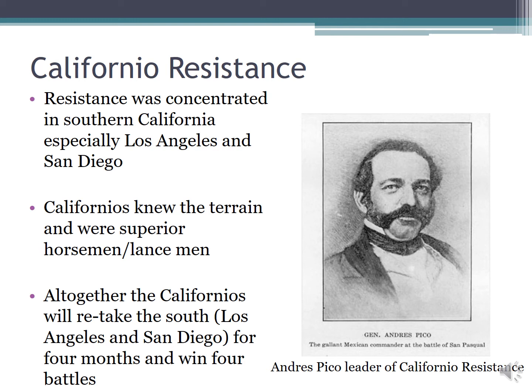The pockets of resistance were mostly in Southern California — Los Angeles and San Diego. These Californians were well equipped on their horses. They were superior swordsmen and knew the terrain, giving them a real advantage. They retook parts of the Southland for four months and won four battles. The idea that Americans came into California without meeting any resistance is absolutely false. There were Californians who did not want California to become part of the United States, and they fought — valiantly, and in some cases successfully. Now let's talk about the Battle of San Pascual.